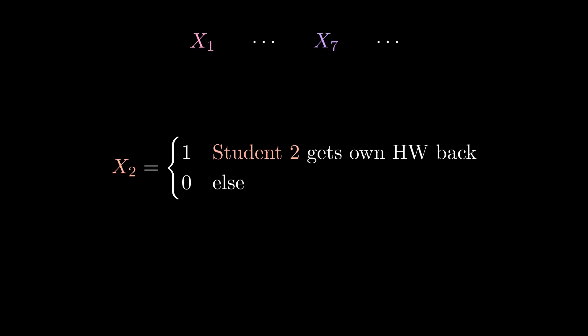Similarly, we can let X sub 2 take the values 0 or 1 based on if student 2 gets their homework back, and so on for all of the students.